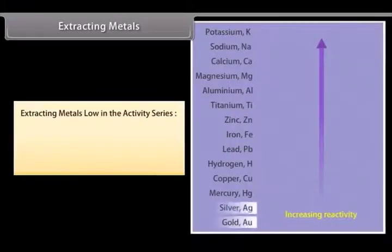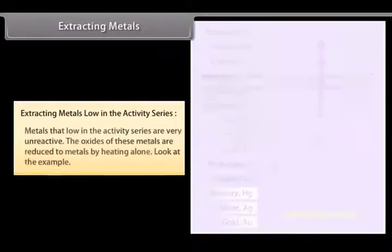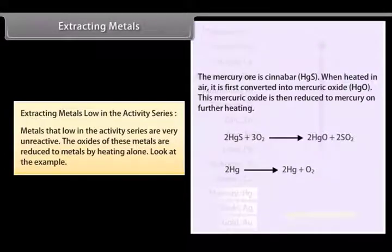Extracting metals low in the activity series. Metals that are low in the activity series are very unreactive. The oxides of these metals are reduced to metals by heating alone.